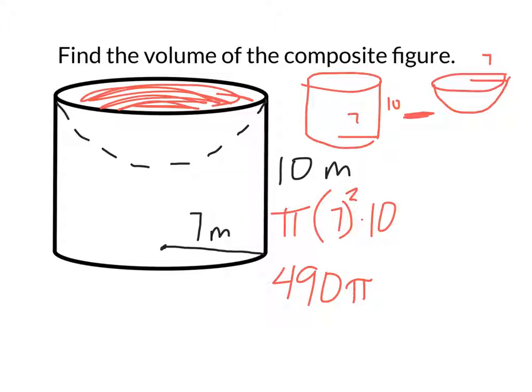And for a hemisphere, 2 pi 7 cubed divided by 3. Now this one might take a little bit more calculations. I'm not sure what 7 cubed is off the top of my head. So let me put it in the calculator. 228 and 2 thirds pi, which is not a pretty number.